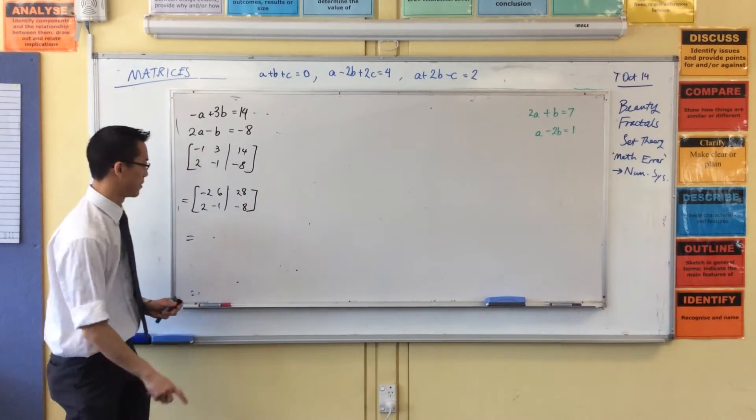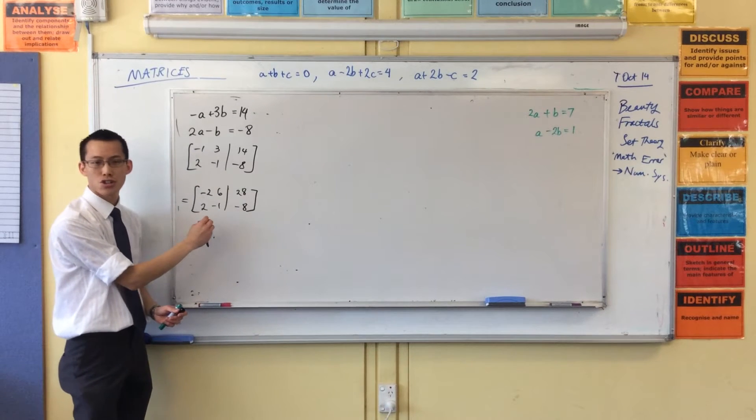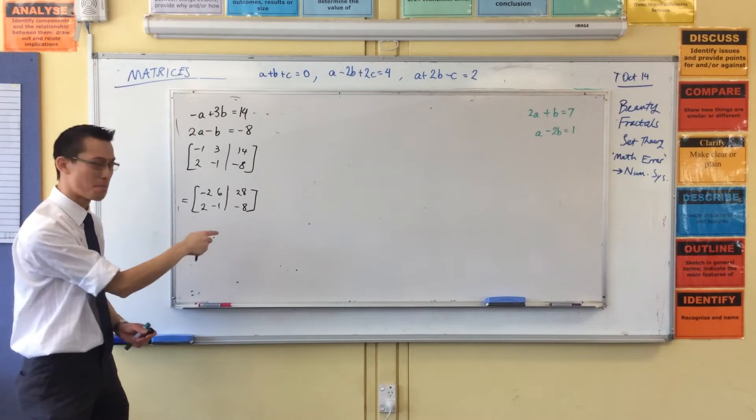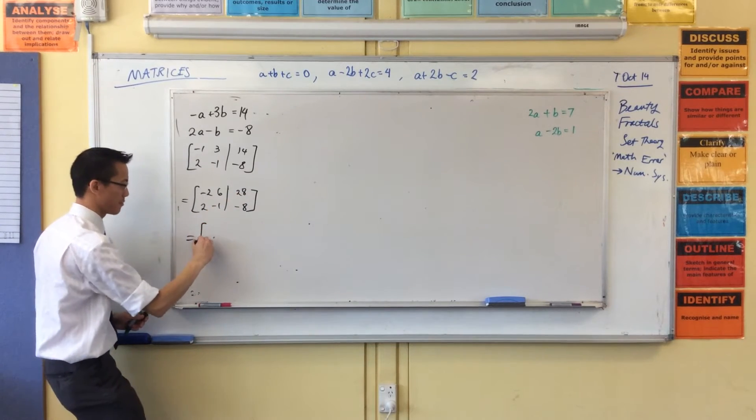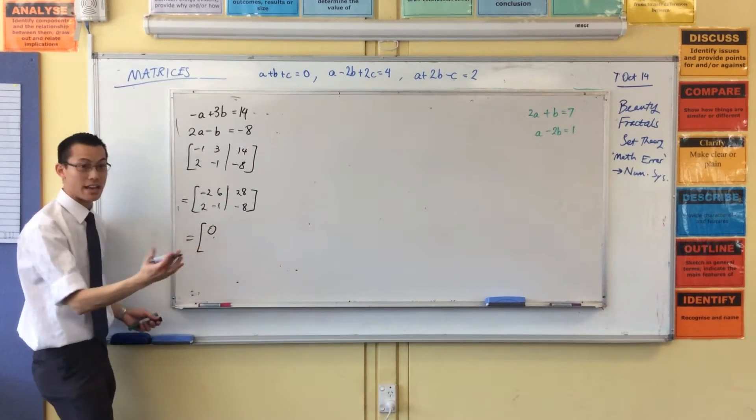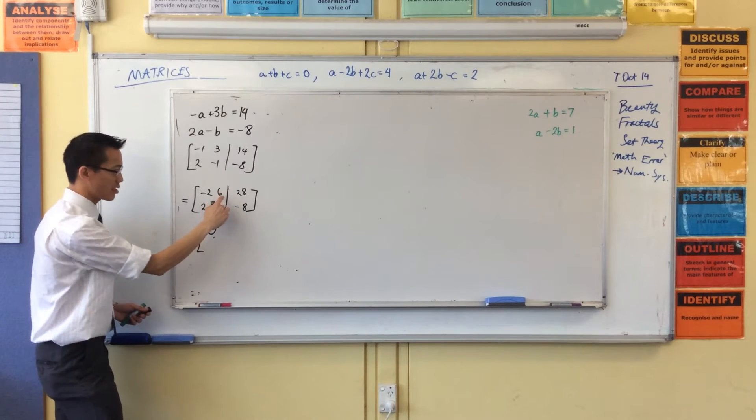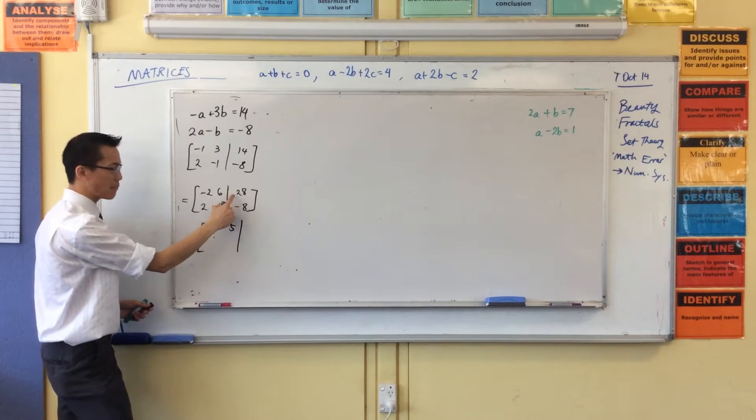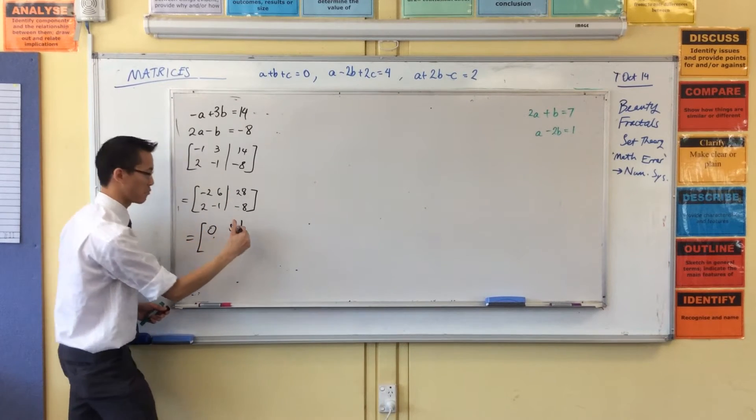Sorry, let's pick up again. I'm going to add this bottom row to the first one. Watch. Zero, as you expected. Six plus negative one. Five. Twenty-eight plus negative eight. Twenty. Good.